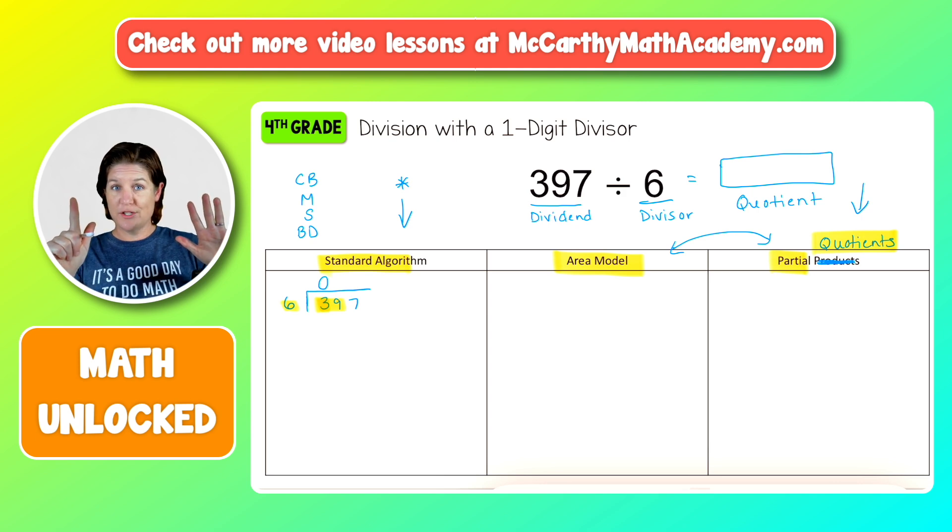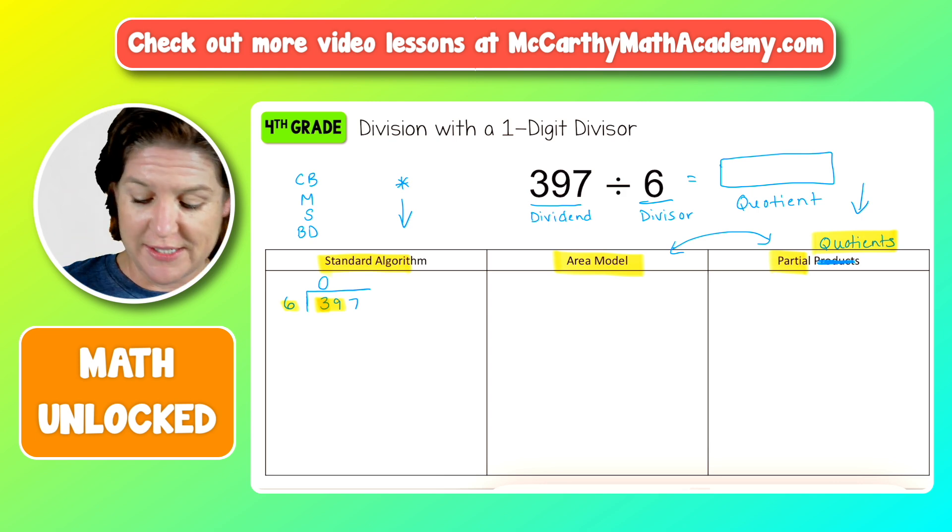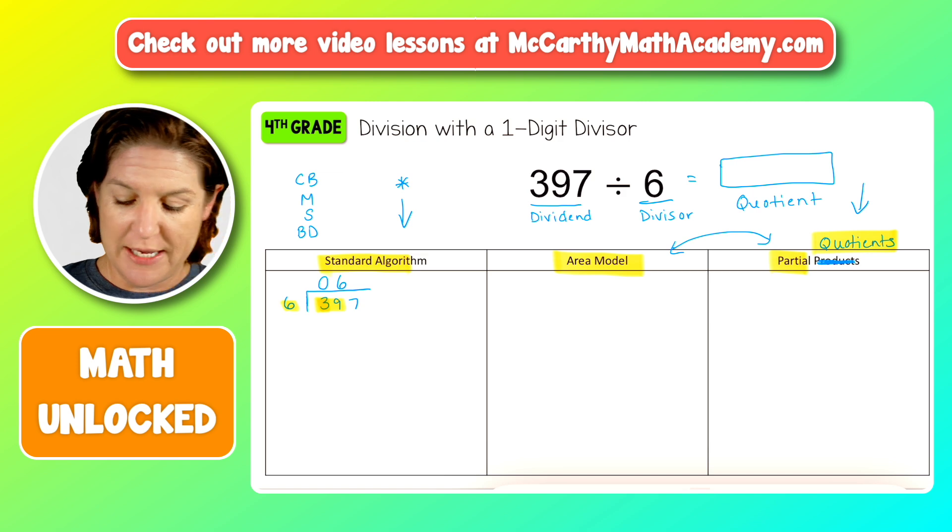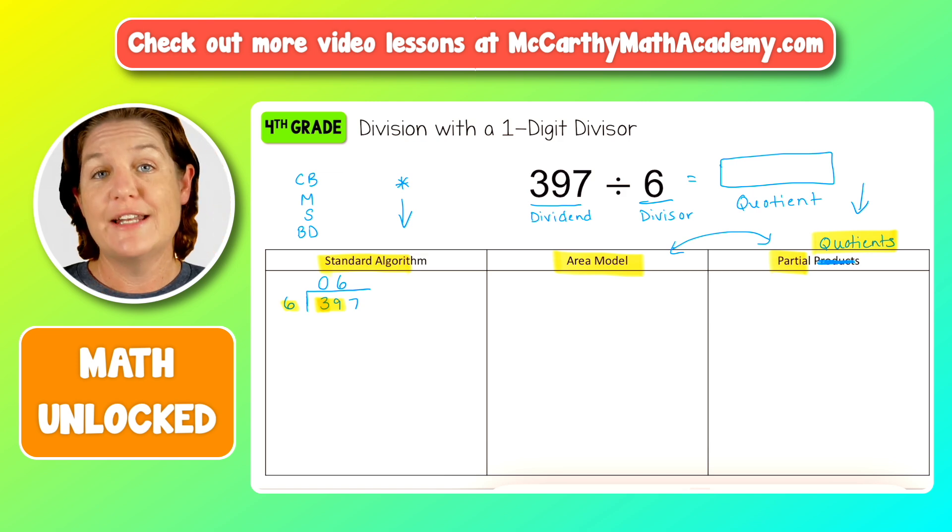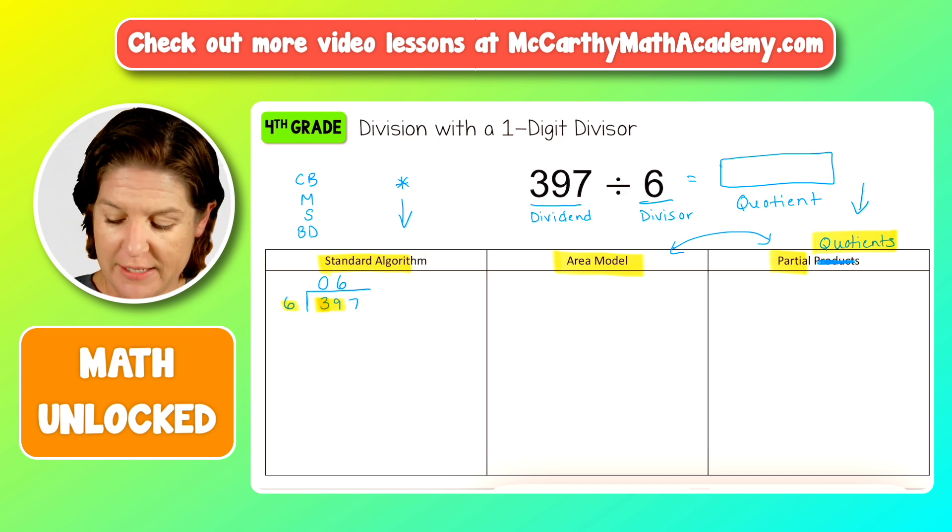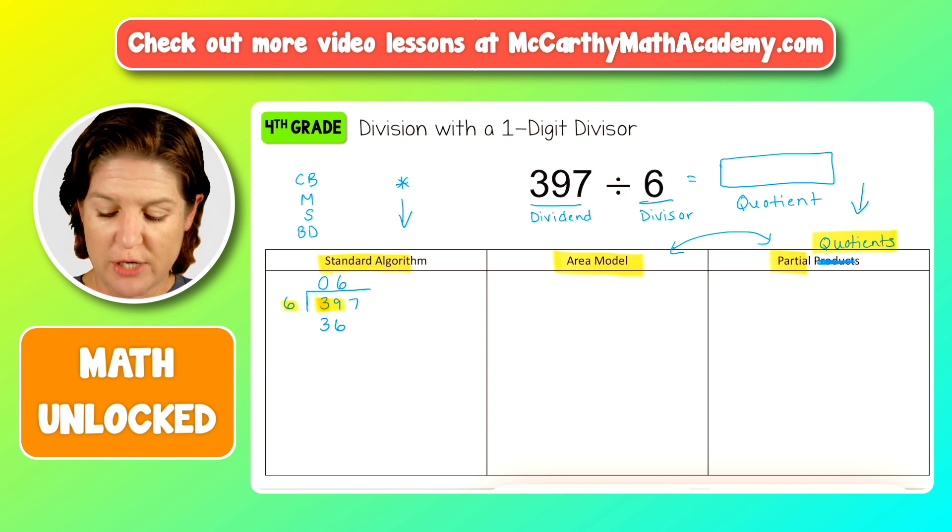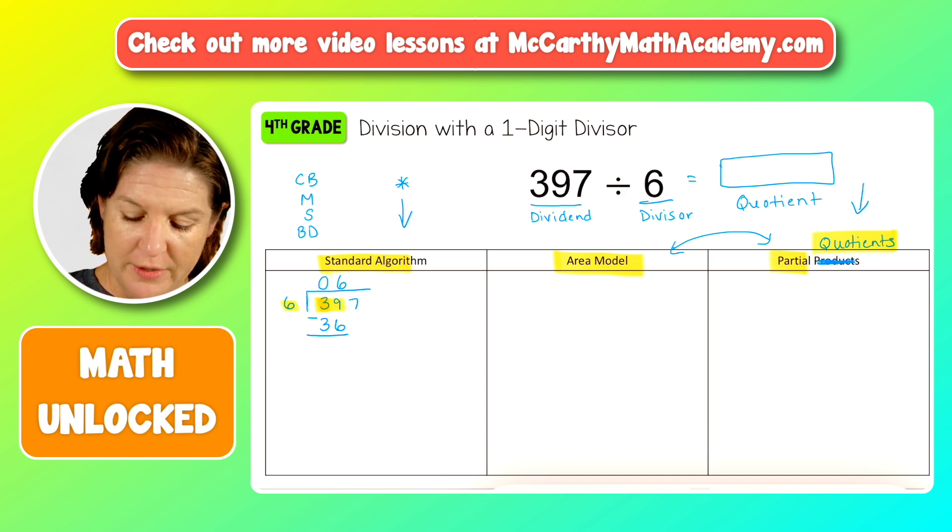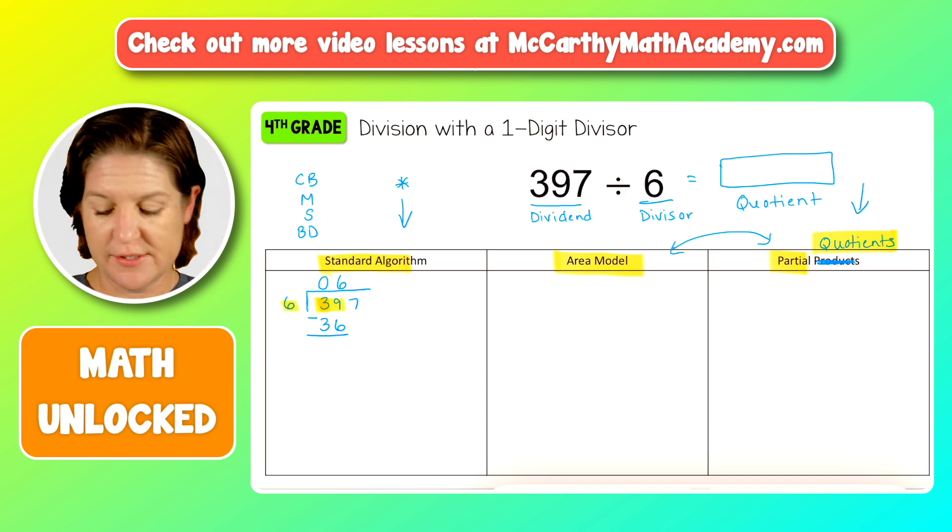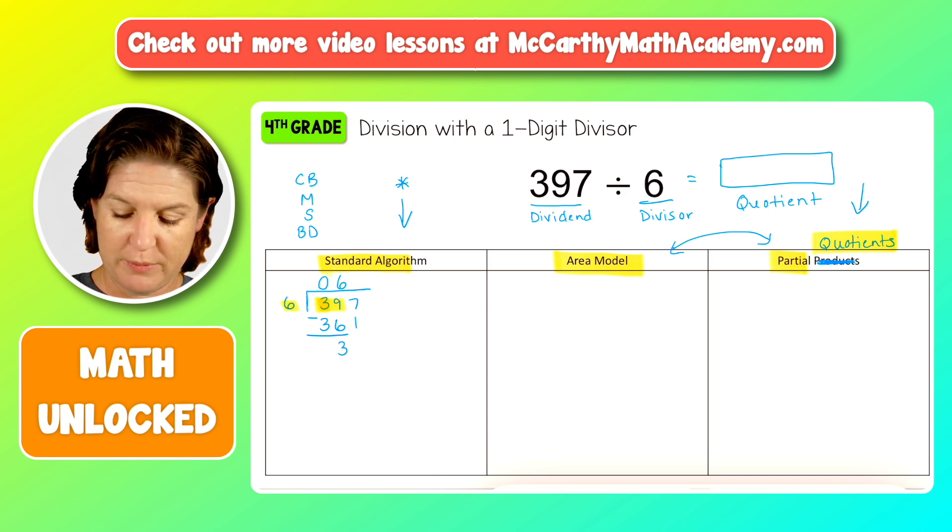Because next would be 42. That's too much. So six times. I counted by, that was six times. Now I'm going to multiply. Six times six is 36. The next step is to subtract. 39 minus 36 is three. And then we bring down, bring down that seven.